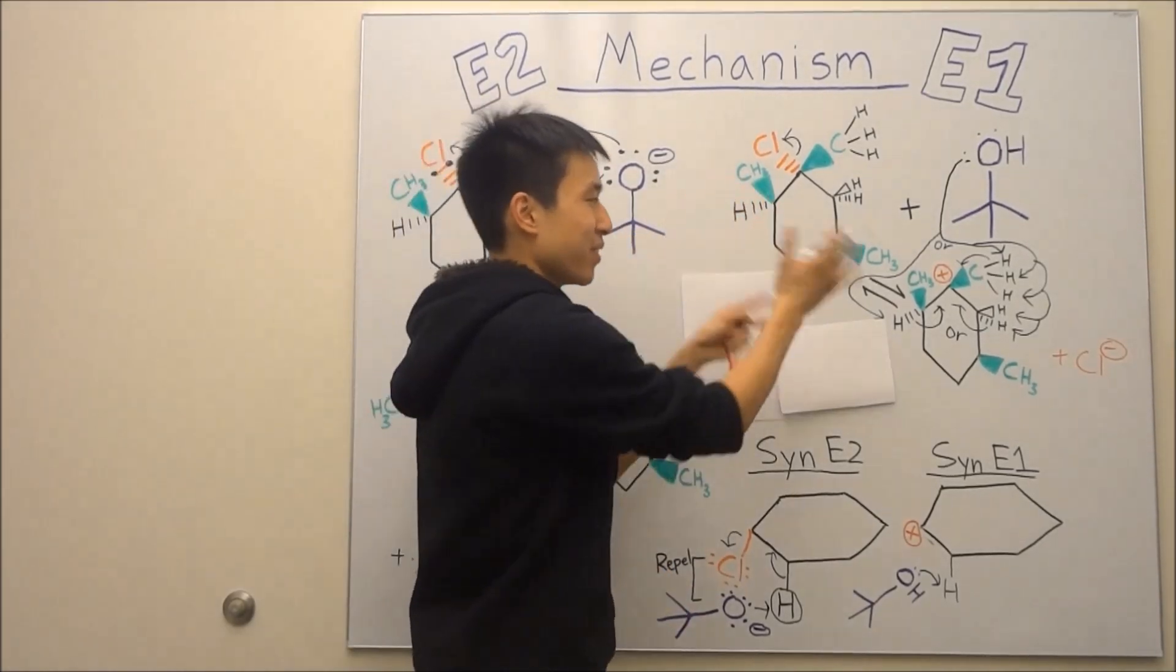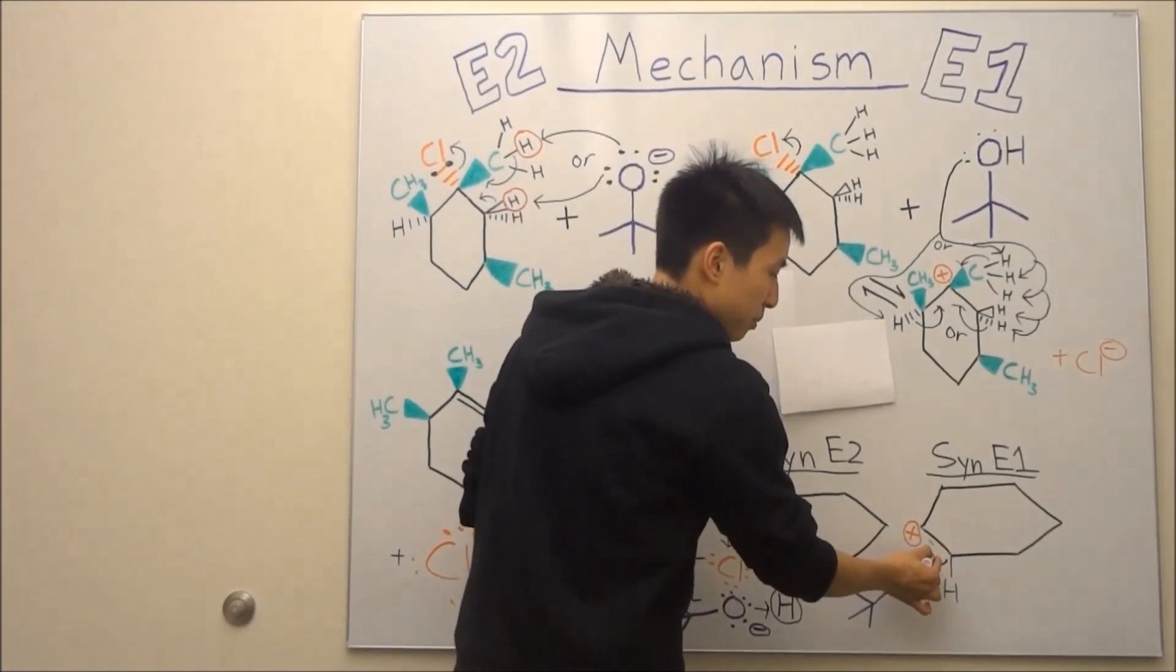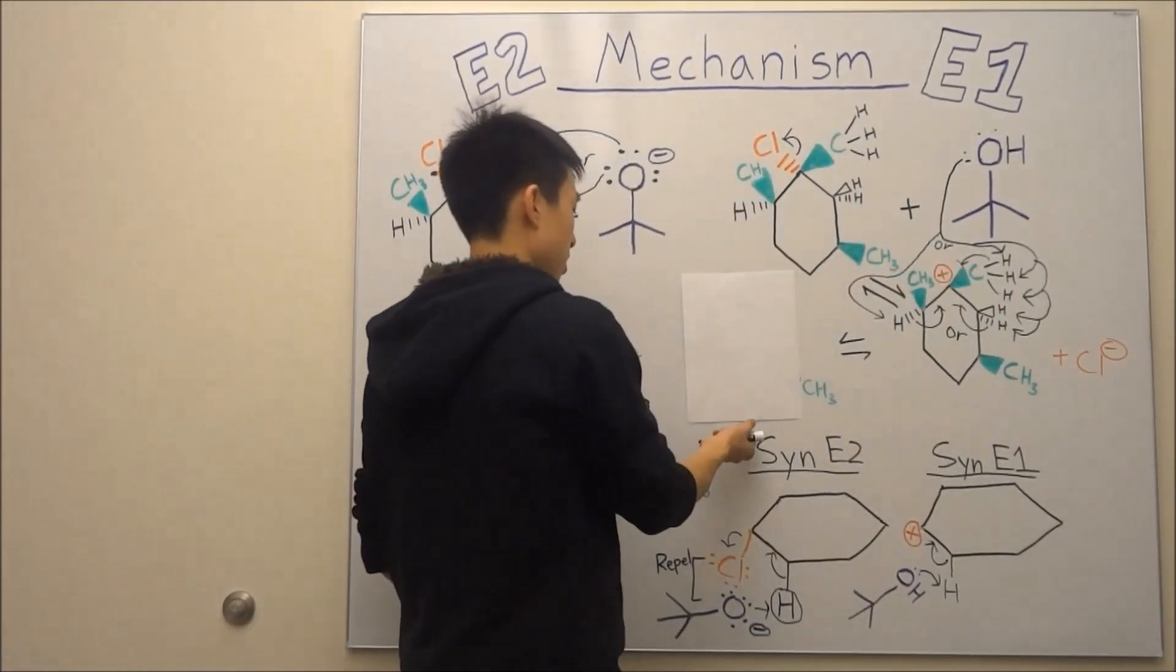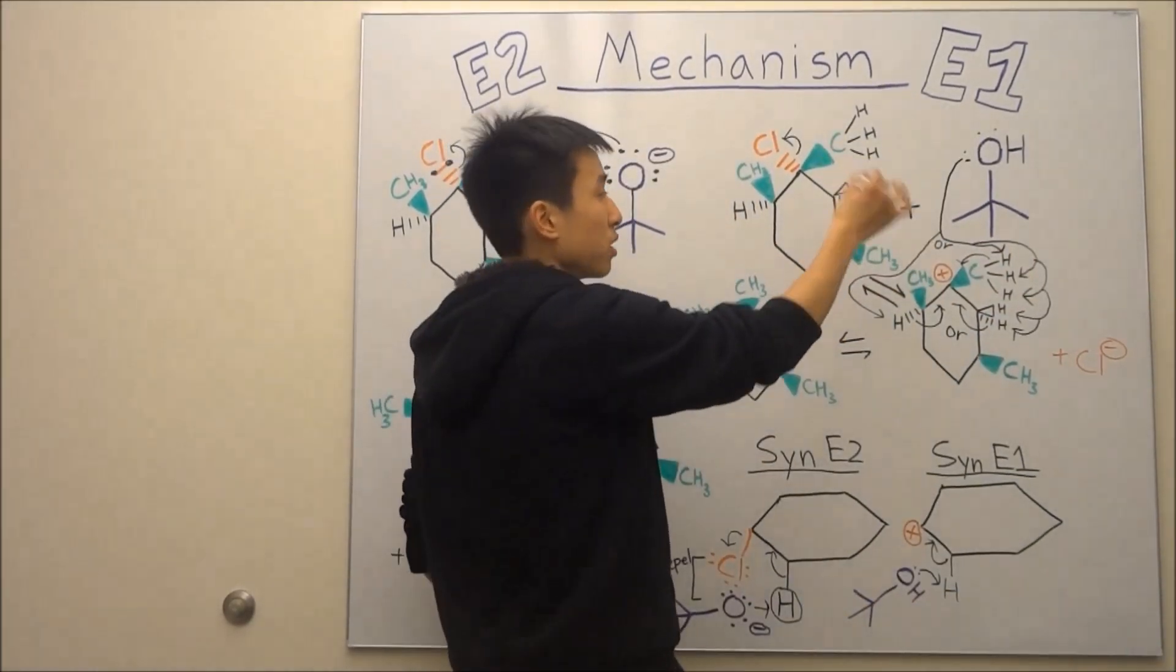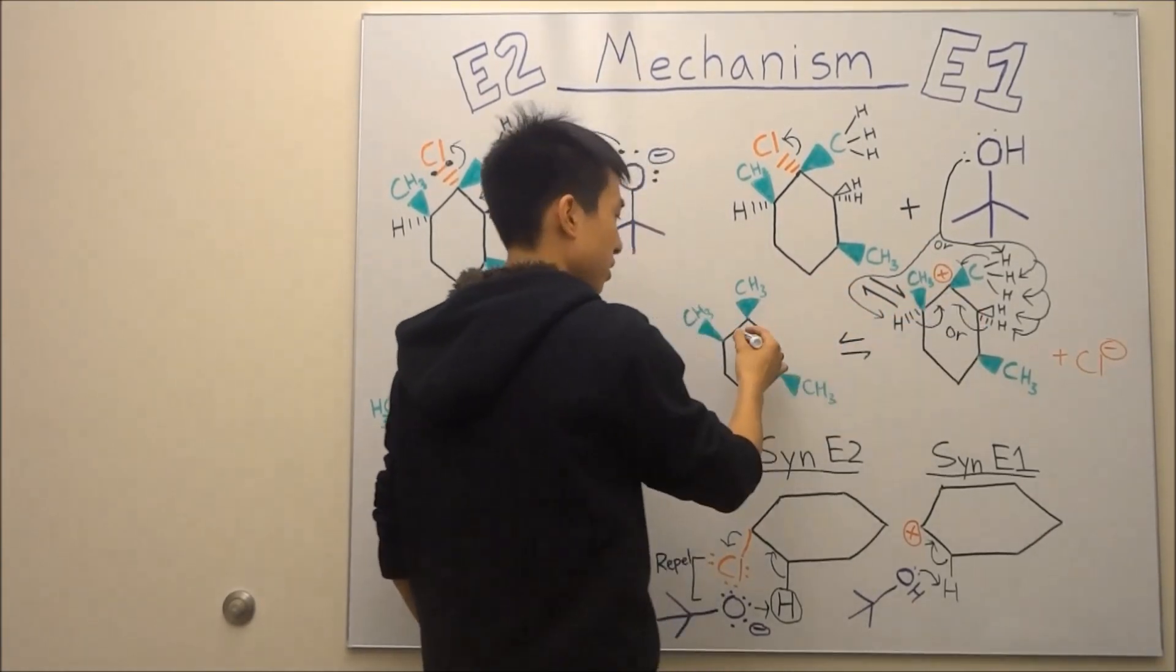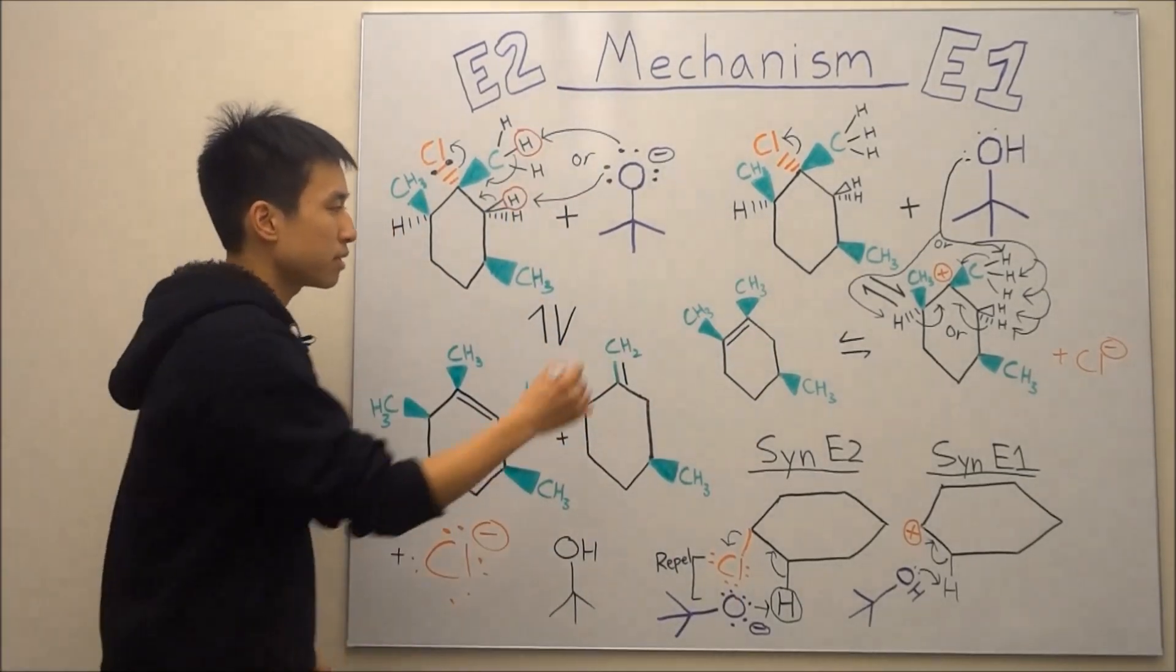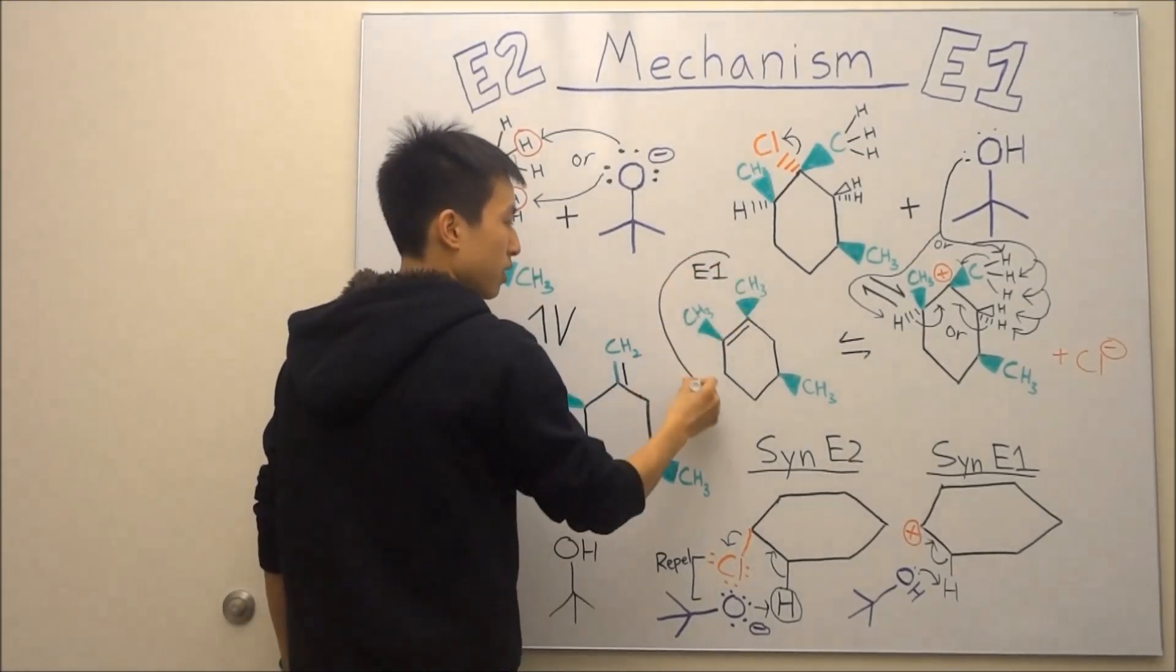So terbutanol is grabbing the hydrogen. Electrons are freed up. They can resonate over to form your alkene. What's your next product going to be? So if the terbutanol grabs this hydrogen, the electrons of this hydrogen are going to go over and you're going to form that alkene carbon-carbon double bond. So this is going to be your E1-only product,